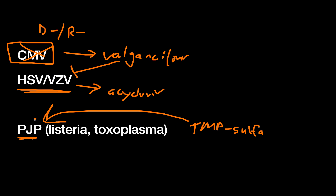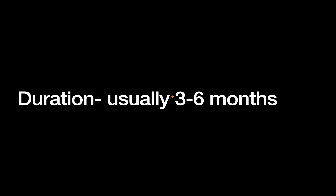To summarize: CMV is prophylaxed with valganciclovir, which also covers HSV and VZV; those two can alternatively be covered by acyclovir alone; and PJP is covered by Bactrim. How long do we give prophylaxis? Think about how long your induction immunosuppression lasts — about three to six months. This is not a lifelong thing; it's given during the period the induction regimen is active. If a patient receives an anti-rejection dose of medication, you would restart infectious prophylaxis since they're again at higher risk.